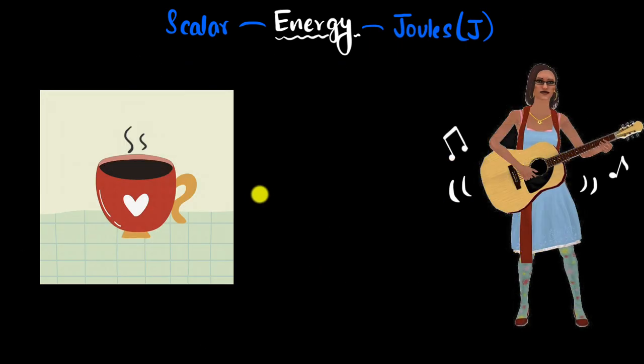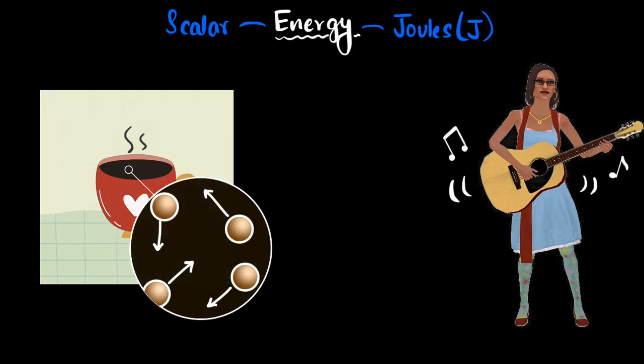That brings us to our original question. What's common between these two? A hot coffee we say has thermal energy in it. Hotter it is, more thermal energy. But if you were to zoom in, when things are hot, basically their atoms are jiggling faster or they're moving very fast. In other words, they have more kinetic energy. So thermal energy at a microscopic level is basically kinetic energy.